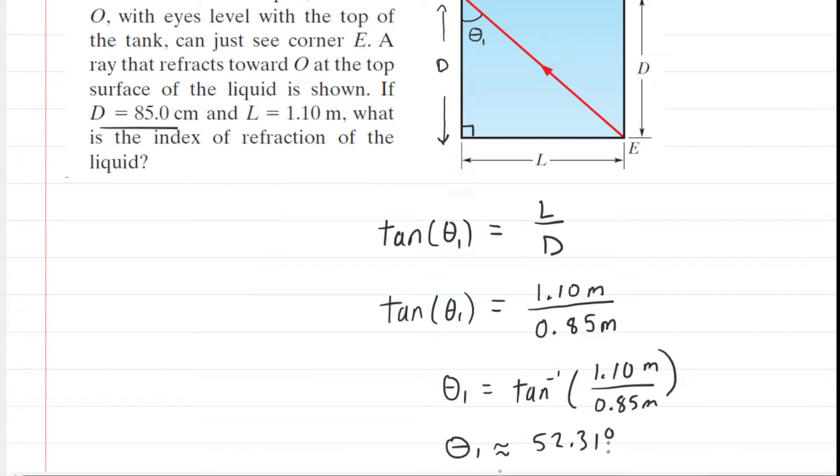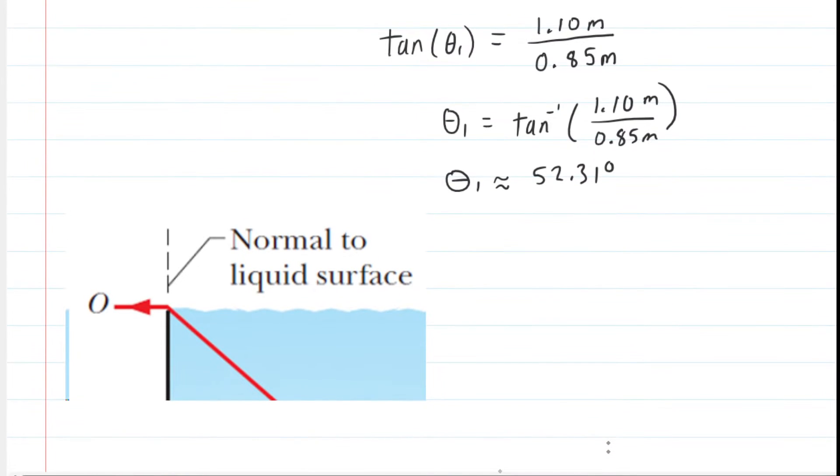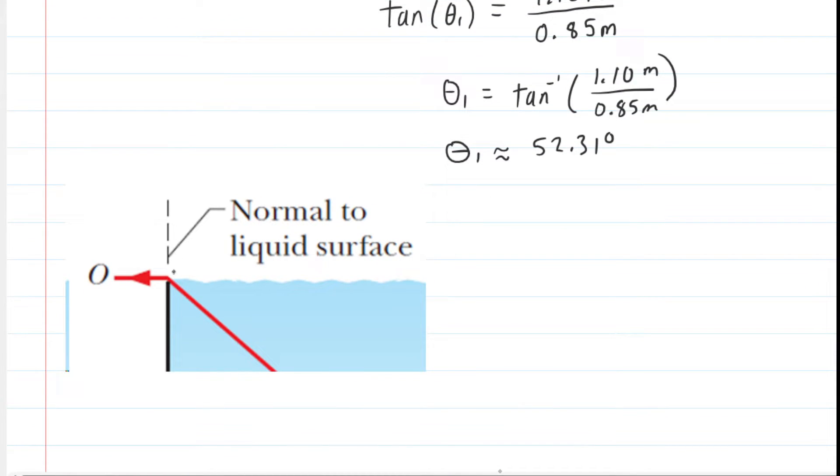Now we're going to see why knowing that theta one angle is helpful by taking a look at a close-up of the beam striking the edge of the tank. We just found this angle that we called theta one, and when the beam of light strikes the interface between the liquid and the air on the outside, it bends at a rather interesting angle.